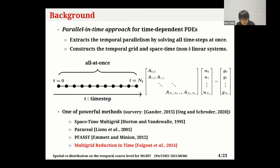In recent years, parallel-in-time approaches have attracted attention due to the massively parallel environment. In these approaches, by solving all time steps at once, it extracts temporal parallelisms in addition to the conventional spatial parallelism. It constructs space-time overall systems and solves them iteratively. One of the powerful methods is the multigrid-based methods. In this work, I focus on the multigrid reduction in time — the MGRIT method — in particular the parallel implementations.